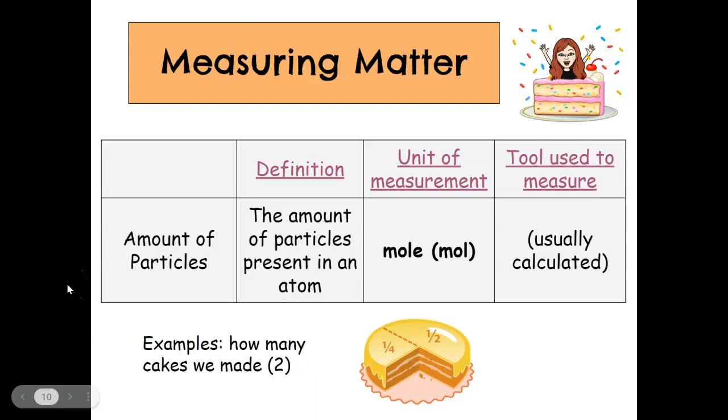And then something else that we're going to be using in chemistry, this will be new to you guys, is the amount of particles. So when we get to unit five, we will start talking about how many particles are in a substance, and this is going to be measured by something called the mole. So not the mole like the animal, but it's mole, M-O-L. And then this is usually calculated, so we are going to do some math in this course and you guys are going to eventually learn how to calculate that.